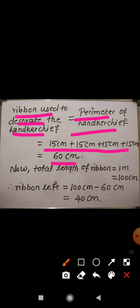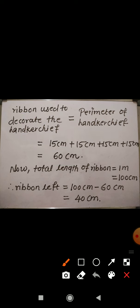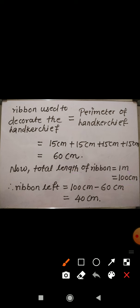The total length of ribbon is 1 meter, which equals 100 centimeters. If we subtract the ribbon used from the total length, we get the ribbon left. So the ribbon left = 100 centimeters minus 60 centimeters = 40 centimeters.